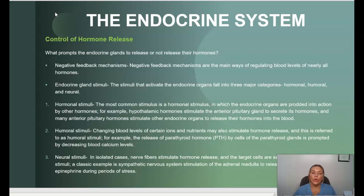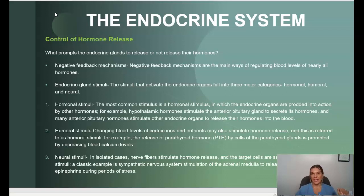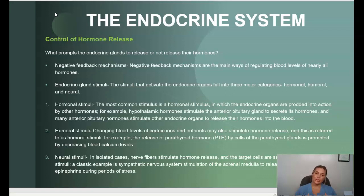Humoral stimuli: changing blood levels of certain ions and nutrients may also stimulate hormone release. An example would be the release of parathyroid hormone by cells of the parathyroid gland, prompted by decreasing blood calcium levels. Neural stimuli: in isolated cases, nerve fibers can stimulate hormone release. An example would be the sympathetic nervous system stimulating the adrenal medulla to release norepinephrine and epinephrine during periods of stress.